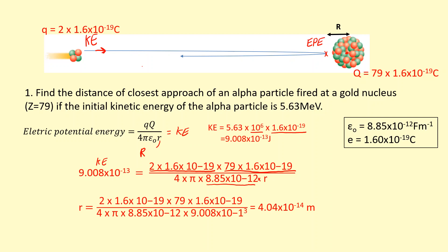Rearranging this for R, solving it, I get 4.04 times 10 to the power of minus 14 meters, which is roughly 40 femtometers, which is typically the answer you get.